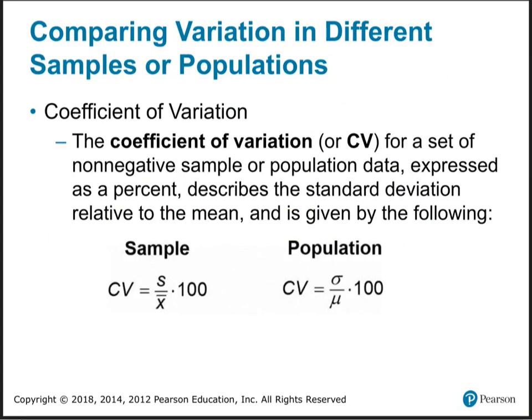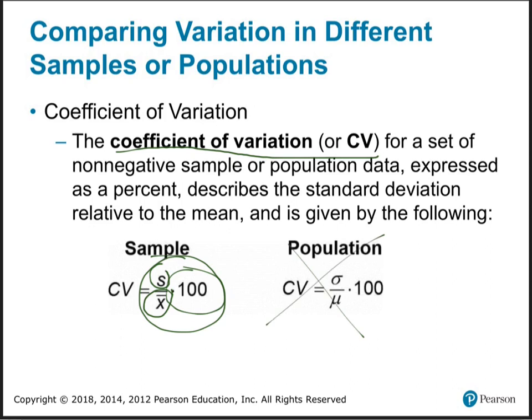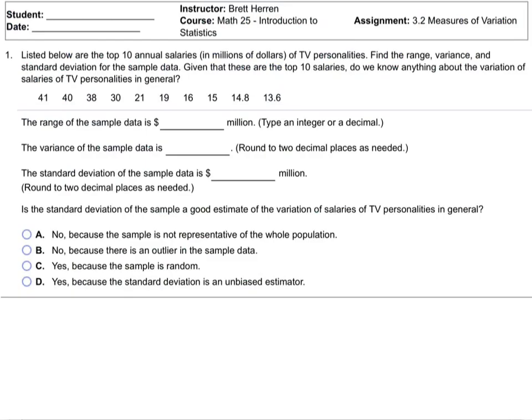One more thing called the coefficient of variation. Basically, you take the standard deviation, divide by the average, and multiply by 100 to get a percentage. Don't worry about this yet — I'll show you exactly what it means in the context of a homework problem.